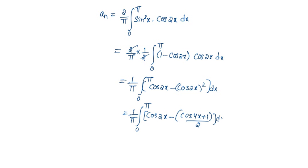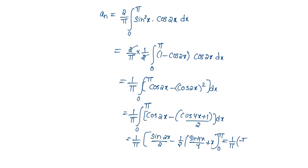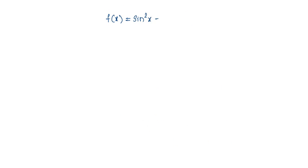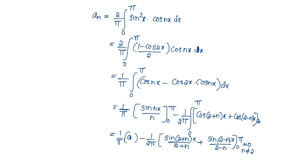Integrating: (1/π)[sin2x/2 - (1/2)(sin4x/4) - x/2] from 0 to π. Applying the limits, this gives (1/π)(-π/2), so a₂ = -1/2 = -0.5. Therefore the Fourier series of f(x) = sin²x is a₀/2 + a₂cos2x = 1/2 + (-1/2)cos2x = 0.5 - 0.5cos2x. So the answer is option D.